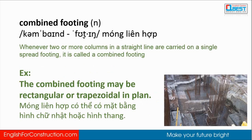Combined footing: whenever two or more columns in a straight line are carried on a single spread footing, it is called a combined footing. The combined footing may be rectangular or trapezoidal in plan.